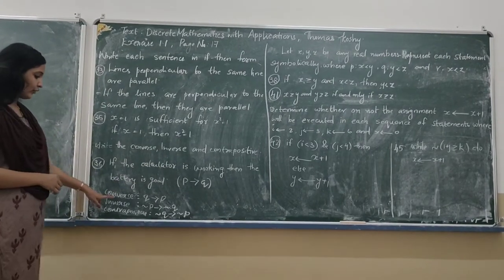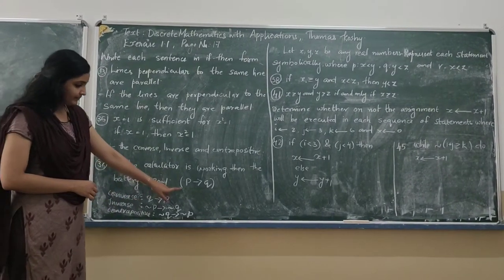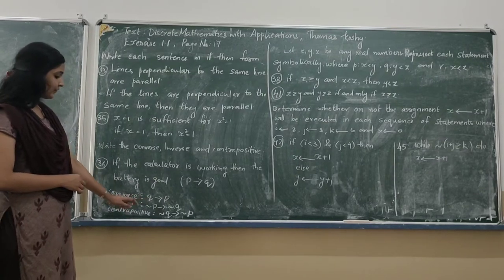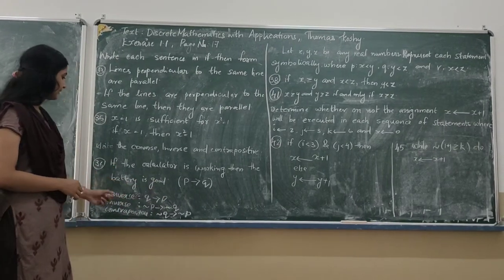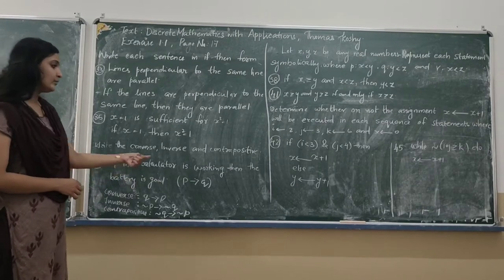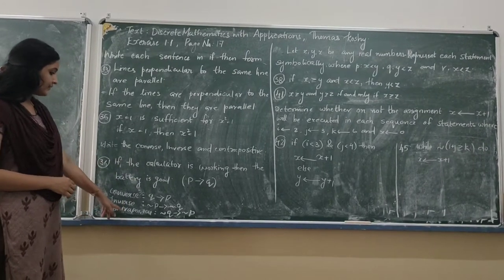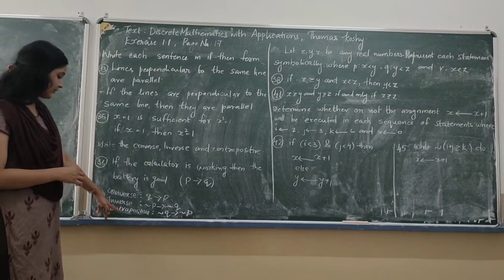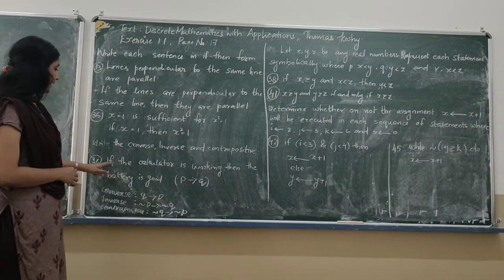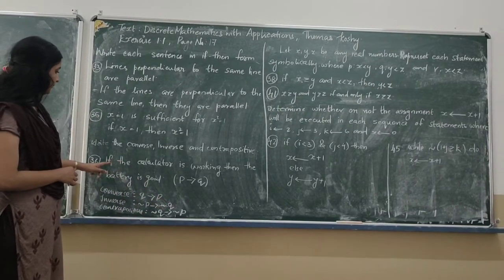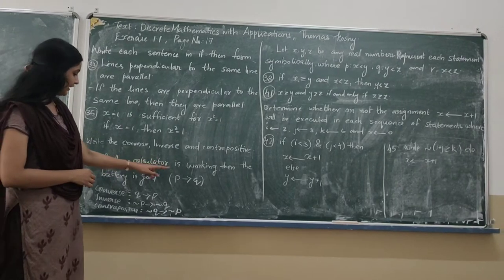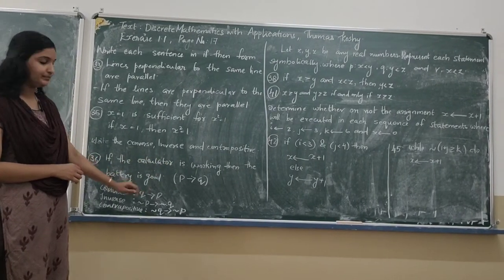Now we find the converse of the statement, which is of the form Q implies P. That is: if the battery is good then the calculator is working. Next, the inverse is of the form negation P implies negation Q. That is: if the calculator is not working then the battery is not good.